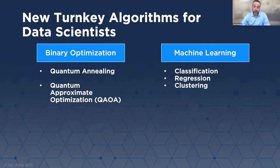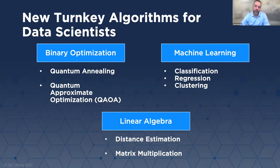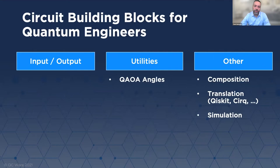Today on Forge, these are the turnkey algorithms for data scientists: we have algorithms for binary optimization and machine learning. The new capabilities we're going to demonstrate today are linear algebra algorithms and implementations that do things like distance estimation and matrix multiplication. These are pretty fundamental capabilities in terms of linear algebra, but they are required to build everything else on top of them. We're also going to demo the circuit building blocks for quantum engineers, including utilities, circuit composing, translation, and simulation.